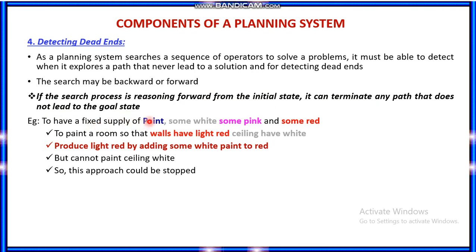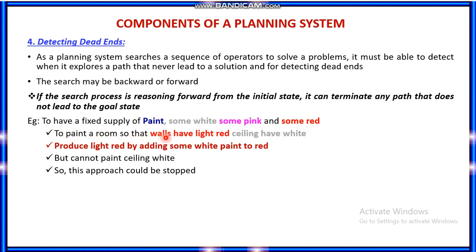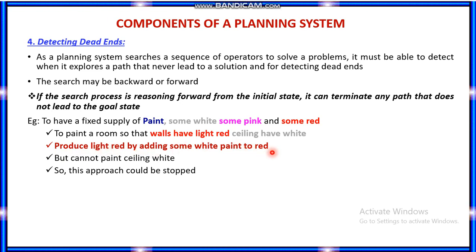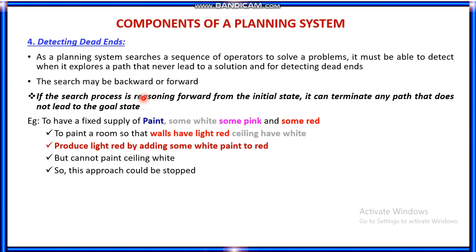For example, consider a painting operation where you have white paint, pink paint, and red paint. To paint a room with light red walls and a white ceiling, you produce light red by adding white paint to red paint. But if you mix the paints this way, you cannot paint the ceiling with white color. So this approach would be stopped — this is forward deadend reasoning.